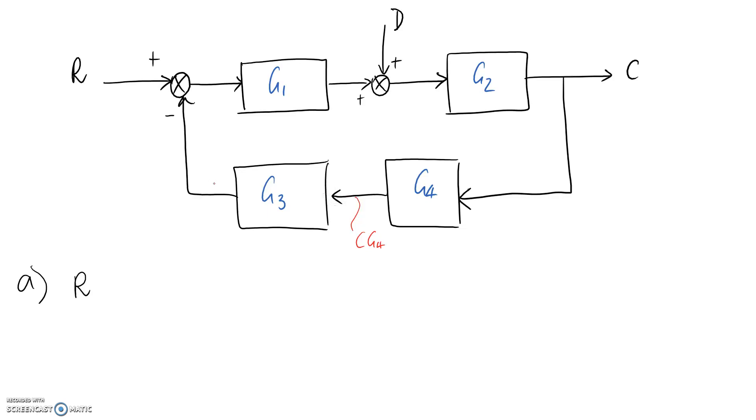And then to jump this other one again I need to multiply by what's inside my block here, so I'm going to get C times G4 times G3 as well. That's the signal coming in and we know that it's going to be negative.